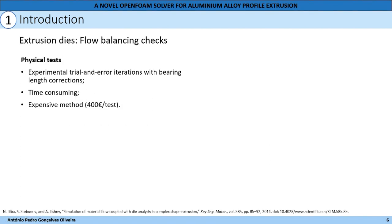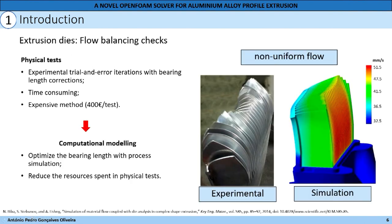The dies before going into production have to be checked. This is done through experimental trial and error iterations, where the profile is extruded and the balance of the flow at the exits is verified. If the design is not satisfactory, the bearing length is corrected until the dimensions are correct. It is a time-consuming and expensive process, because each test can cost 400 euros and each die can be subjected to several tests before going into production. It is in this context that computational modeling can be relevant, aiming to optimize bearing length through process simulation, reducing the resources spent on physical tests.